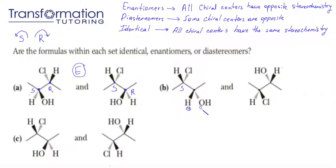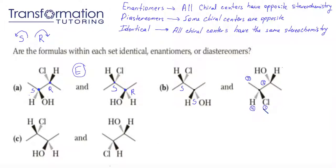For the second chiral center: hydrogen is a four, oxygen is a one, the carbon with the chlorine is a two, the carbon with just hydrogens is a three. It looks like it's going in the R direction again, but because our lowest group, hydrogen, is not going in, we're going to switch its configuration to S. Continuing to the right: chlorine wins — it's a one; hydrogen loses — it's a four. Between the two carbons, the one with the OH wins, getting a two, and the other gets a three. Going one, two, three — it looks like S, and moreover the hydrogen is going in, so we do not have to switch anything. So this is an S configuration.